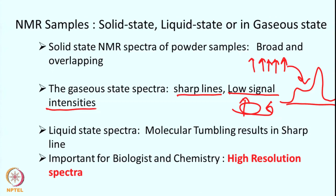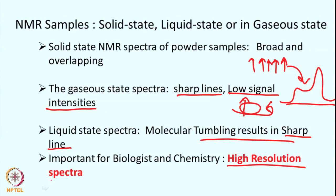The third case is liquid state samples. In liquids, spins tumble very fast and because of that we have sharp lines. Unlike solids, they are not too closely spaced, so signal overlap is not significant. Therefore, liquid state samples give high resolution spectra. For biologists and chemists this is very important because they can get high resolution spectra where they can study the properties of each spin. In this course we are mostly going to deal with liquid state spectra and how this is high resolution.